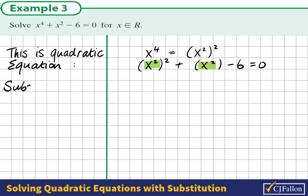It might be easier to see this if we make a substitution. If we let a = x^2, then we can see that x^4 would be a^2. So we can write our equation as a^2 + a - 6 = 0.